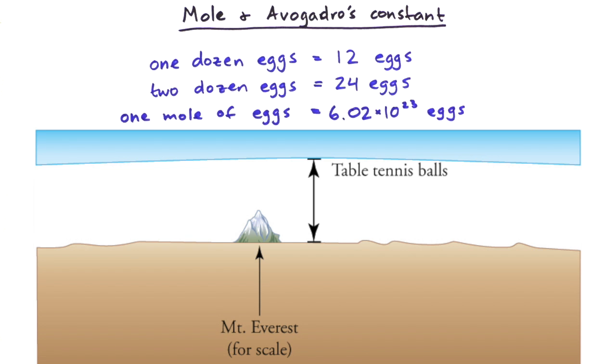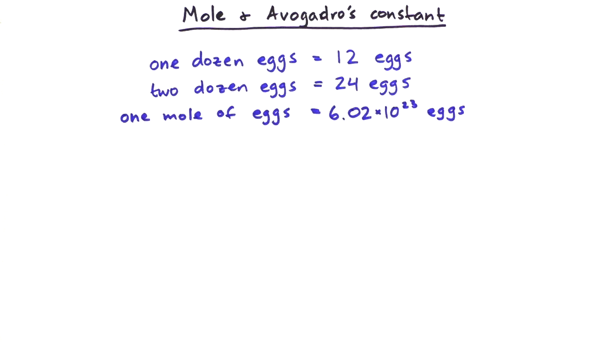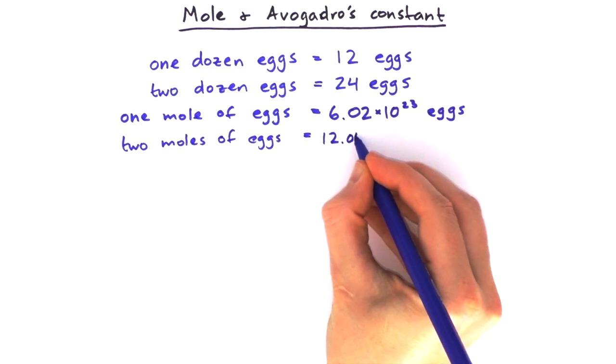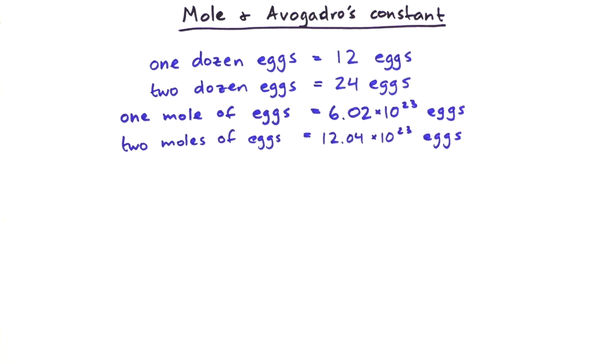Eggs are about the same size as table tennis balls, which means if we had a mole of eggs on Earth, it would cover the whole Earth up to a depth of 40 kilometers. We could also have two moles of eggs, which would be 12.04 times 10 to the power of 23 eggs.